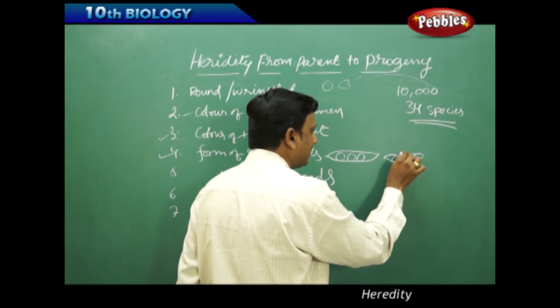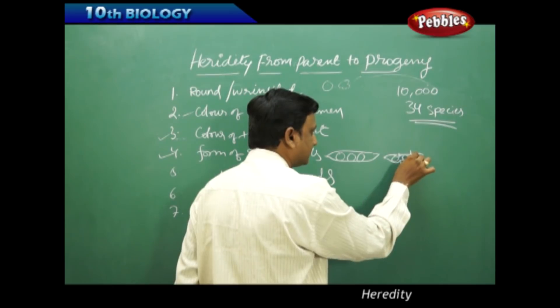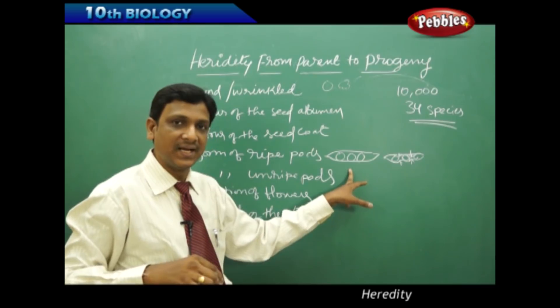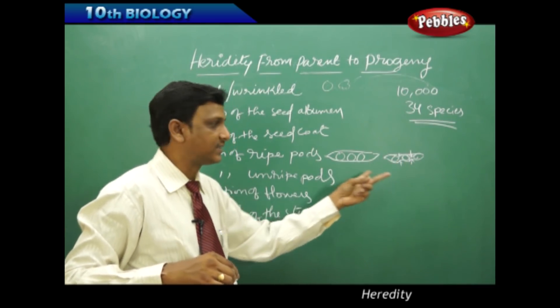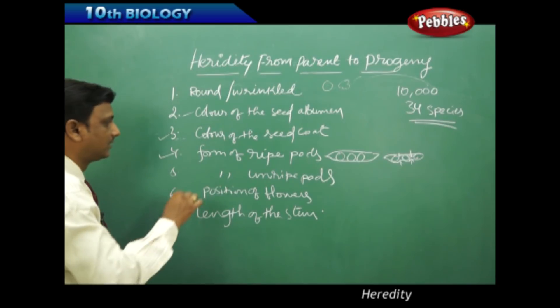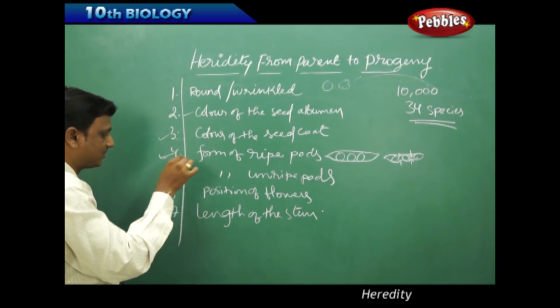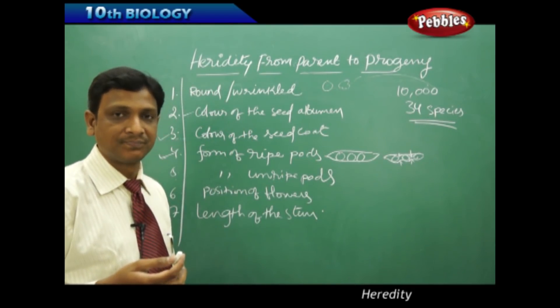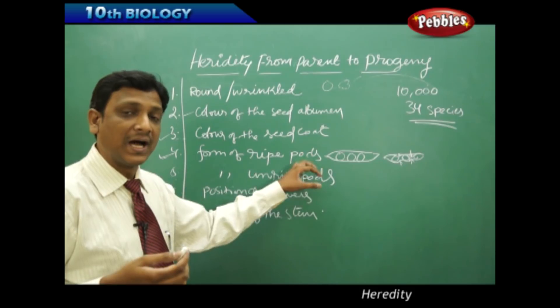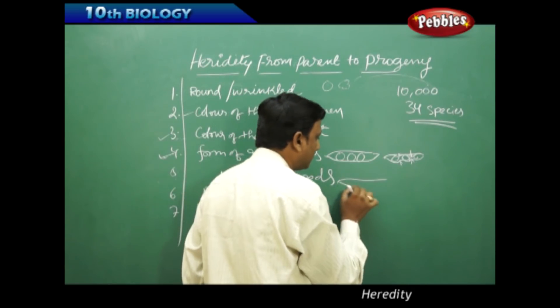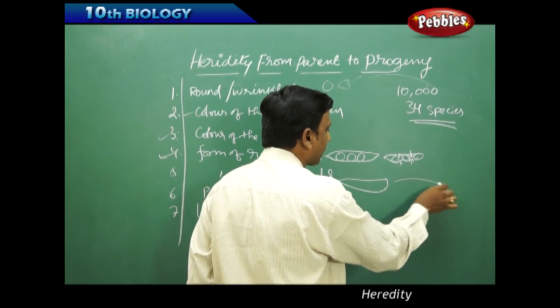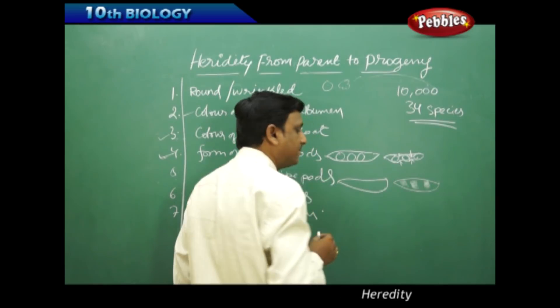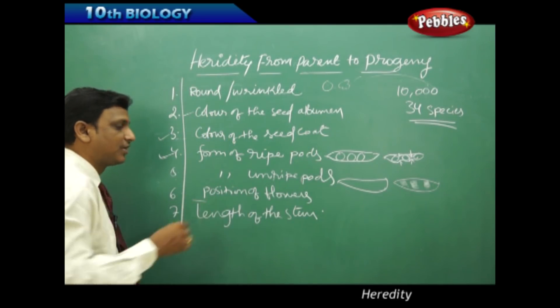Here are the seeds. Here the skin is compressed like this. Some peas turn like this, some stay like this. This contrast character, this pair of contrast characters, was selected as one of the seven. And unripe pods: how are the unripe pods? These are ripened pods. Unripe pods - do they have green color, pale yellow color patches, green patchy appearance, or a plain color? And position of the flowers.